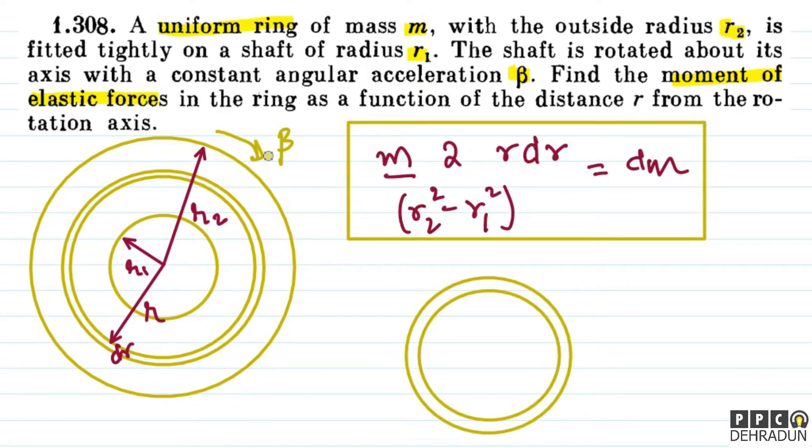Now, let's see. As was said in the problem, this entire system is rotating with constant angular acceleration beta. So, if we talk about the elemental ring, it is also rotating with beta.